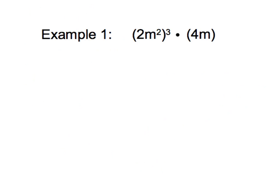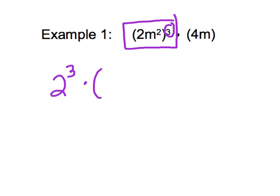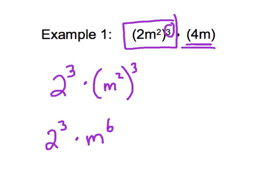Please write down example number 1 in your notes. I can see that I have a power to a power right here — I know this because I see the exponent on the outside, which means that 3rd power on the outside is going to apply to all of my terms inside the parentheses. So that power to a power means we're going to have 2 to the 3rd power times m squared to the 3rd power. For this rule, we multiply our exponents, giving us 2 to the 3rd power times m to the 6th power. This problem also has times 4m after it.